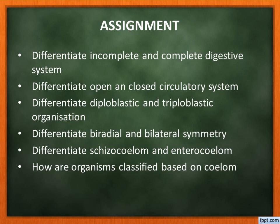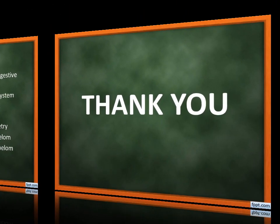Assignments: differentiate incomplete and complete digestive system; differentiate open and closed circulatory system; differentiate diploblastic and triploblastic organization; differentiate biradial and bilateral symmetry; differentiate schizocoelom and enterocoelom; and explain how organisms are classified based on coelom. These questions are clearly mentioned in the textbook. Cover these portions before the next class.